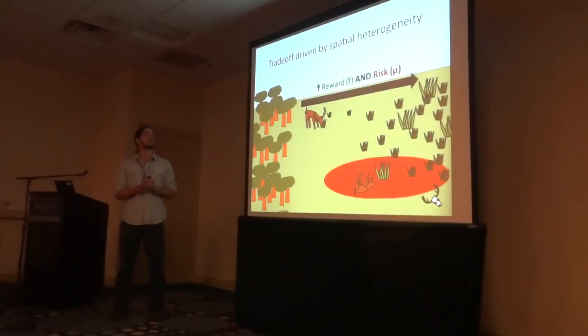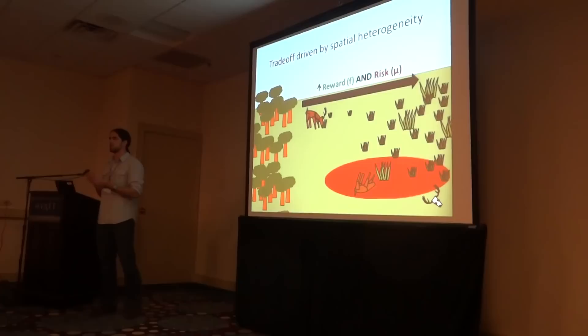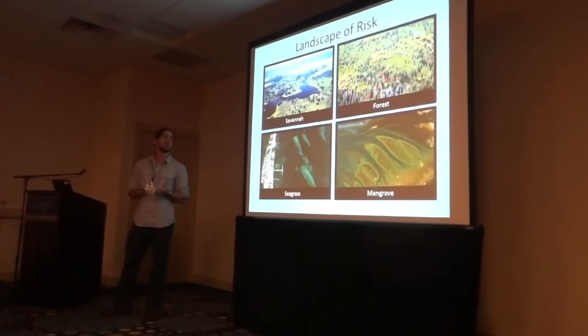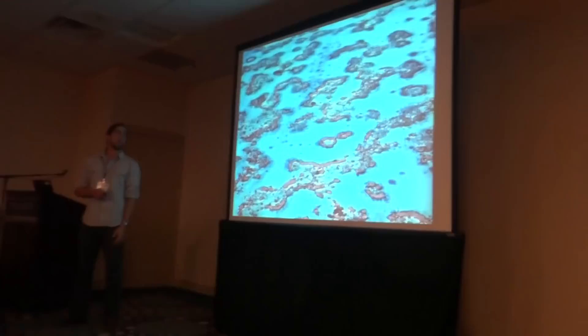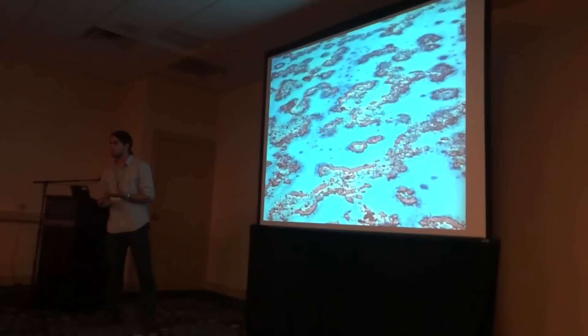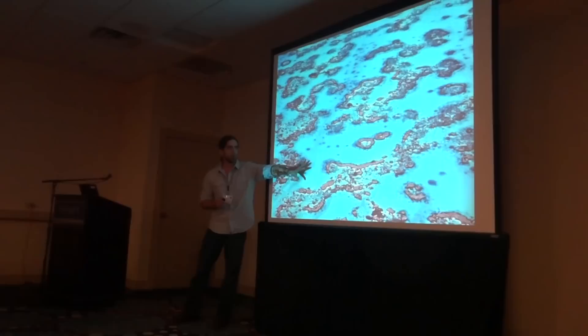What we see here is a foraging trade-off: balancing risk and reward, driven by spatial habitat heterogeneity. We know that spatial habitat heterogeneity, or landscapes of risk, are ubiquitous in ecosystems — both terrestrial systems like savannas and forests, as well as aquatic systems like seagrasses and mangroves. As this aerial photo demonstrates, tropical coral reefs are particularly spatially heterogeneous, and there's a great deal of variation in the spatial extent of open sand flat habitats among reef habitat patches.